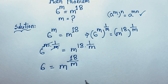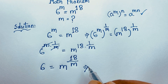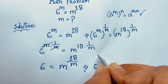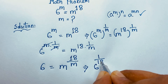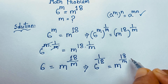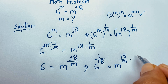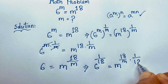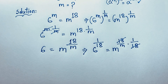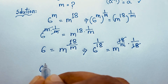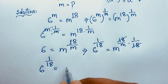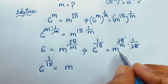Now, at this moment, I apply both sides the exponent 1 over 18. So 6 to the power 1 over 18 is equal to m to the power 18 over m times 1 over 18. This 18 and 18 cancel out. We find that 6 to the power 1 over 18 is equal to m to the power 1 over m.